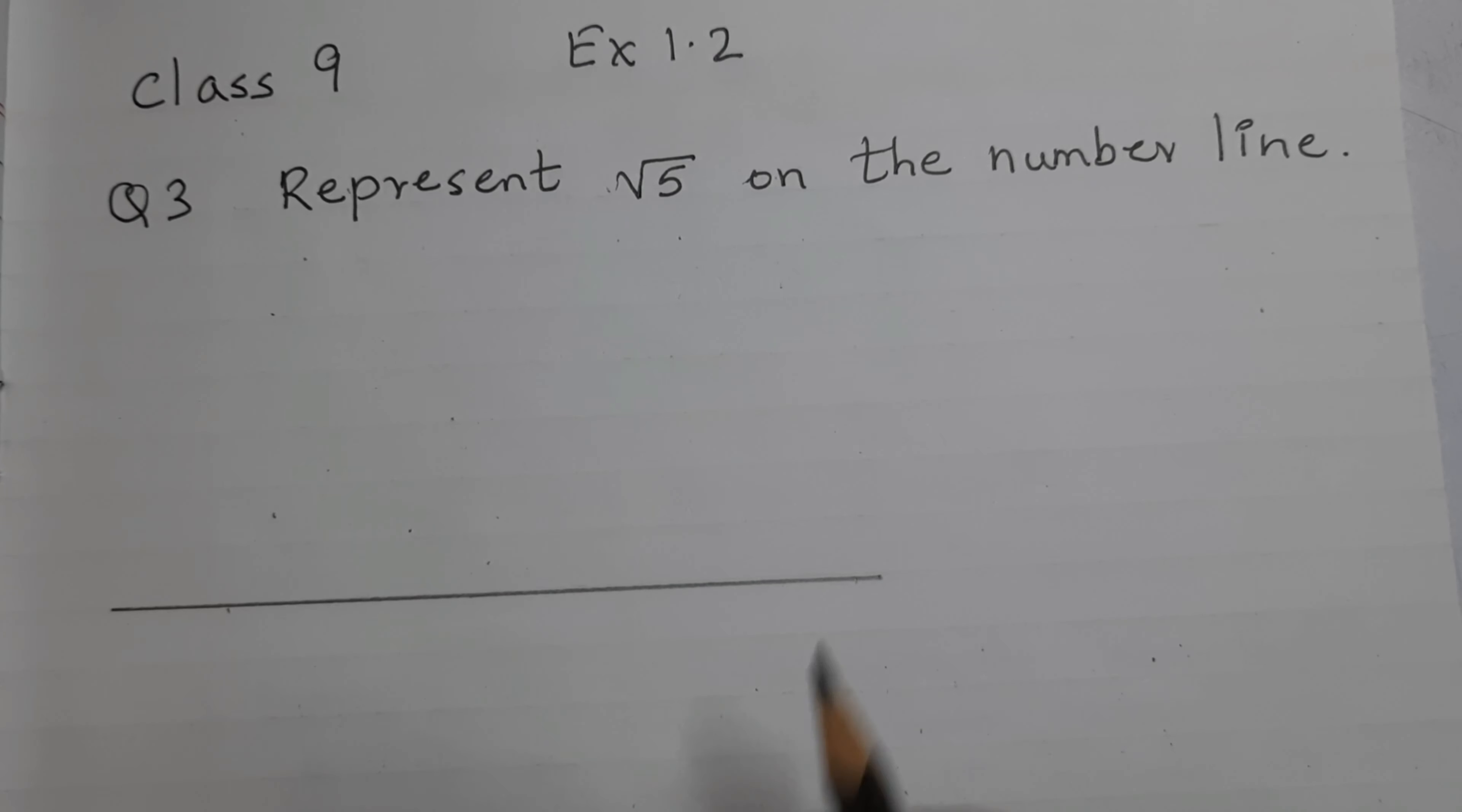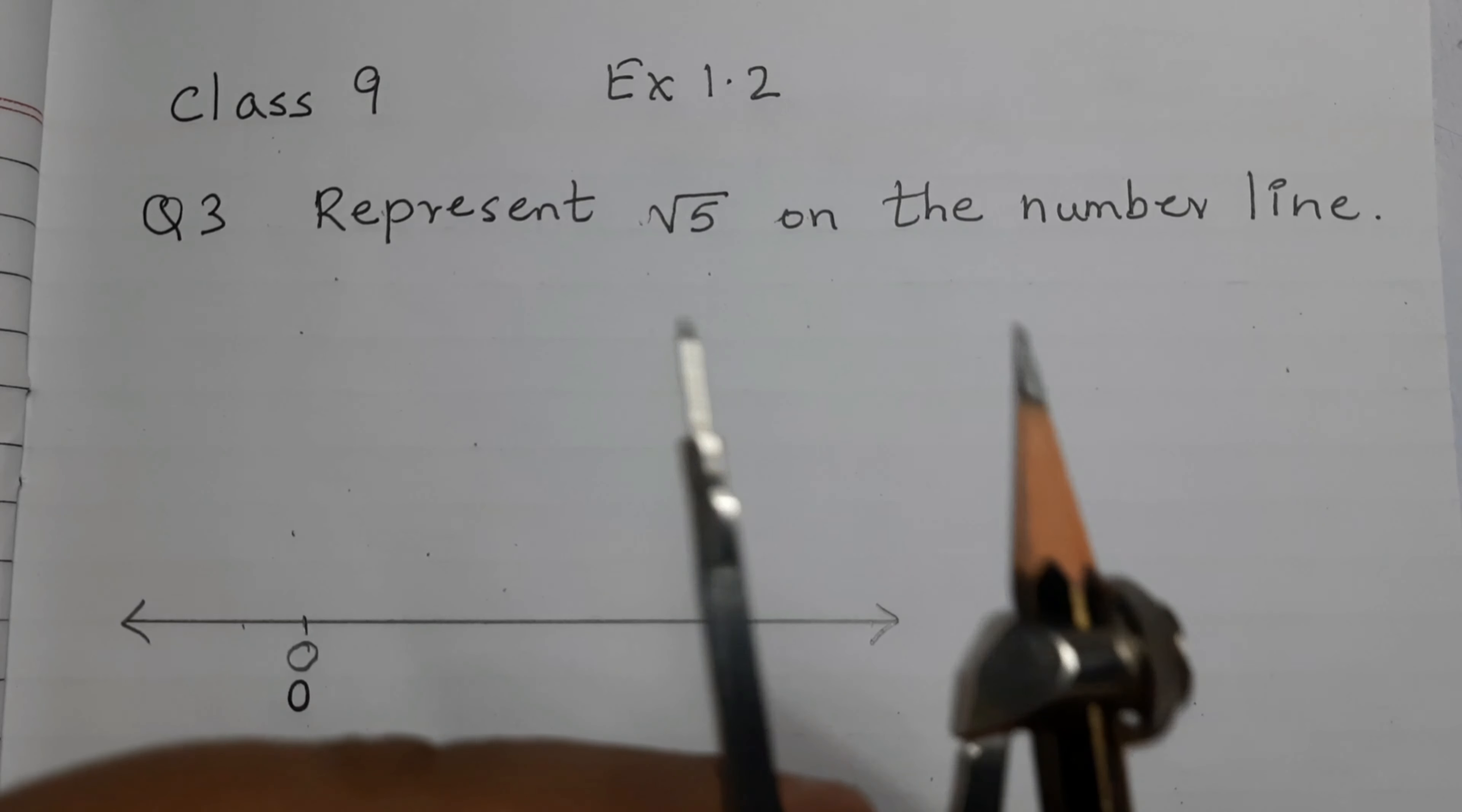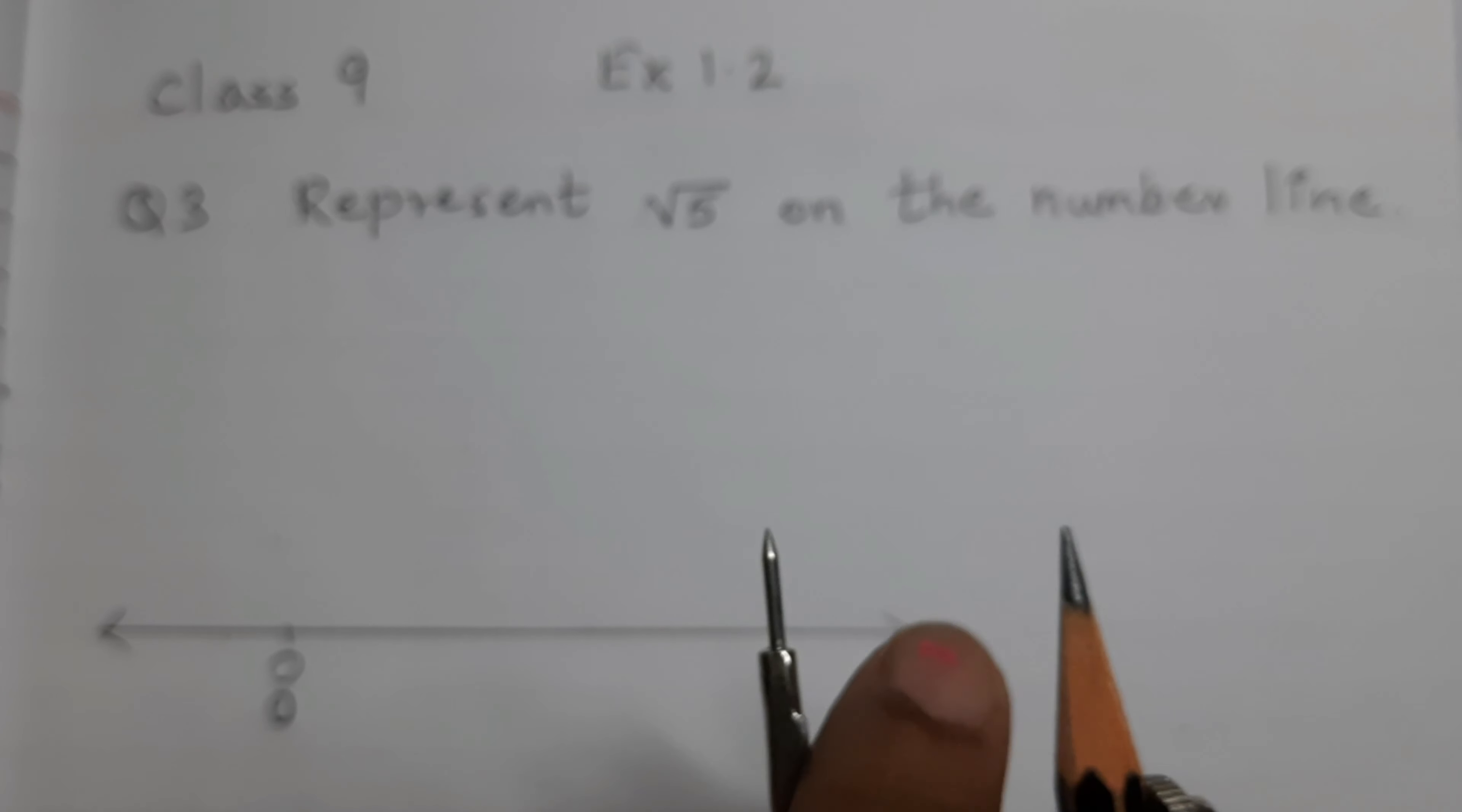First, draw a line and mark a point O. Let O represent 0. Take a compass and any length of your choice, take 2 units from O and label it as A. So I am taking this much distance, this much length, you can take any length. But don't change the length, this is our unit length.